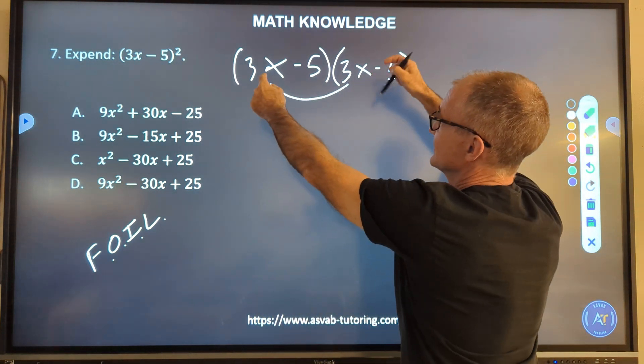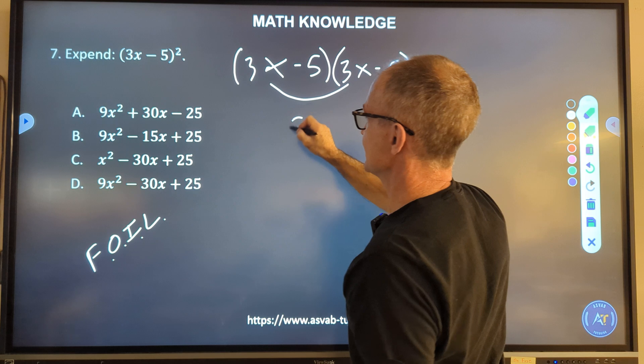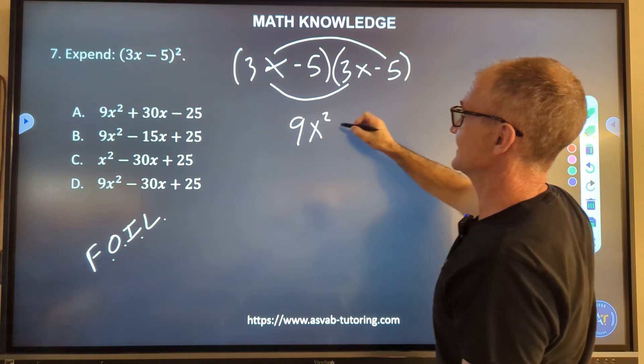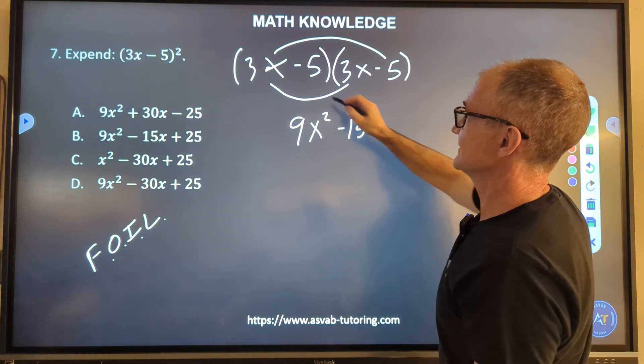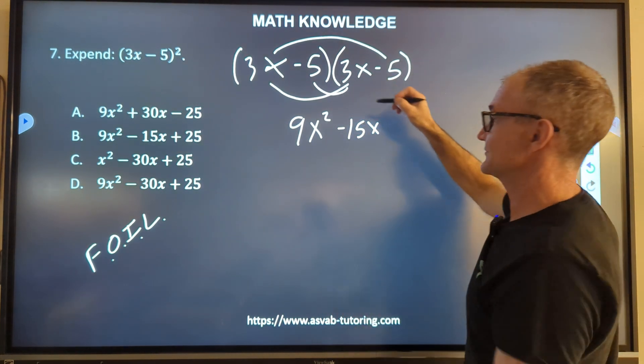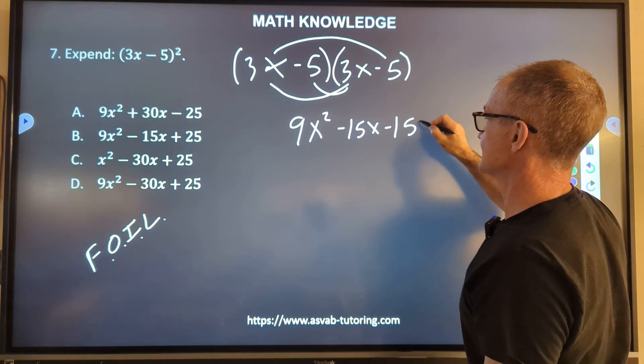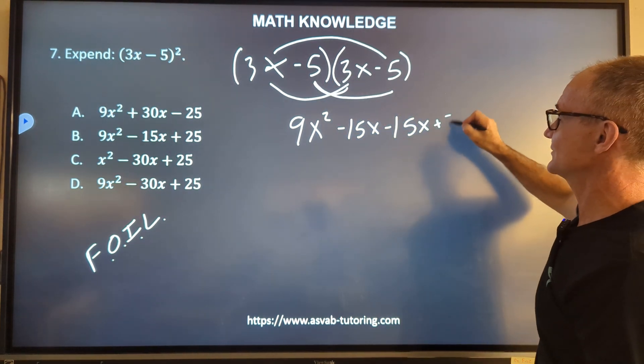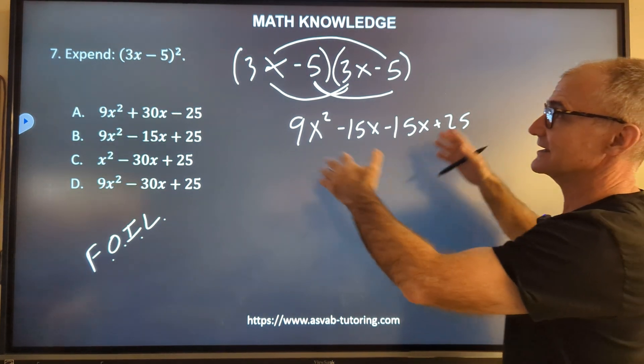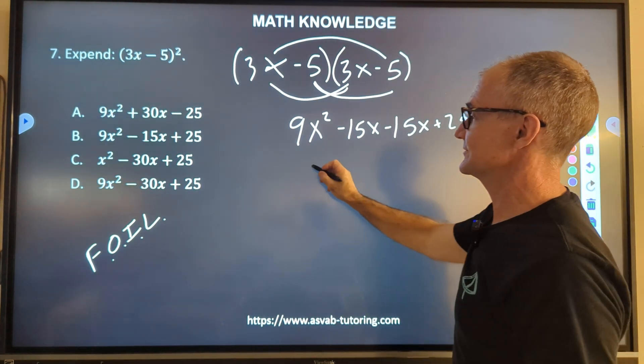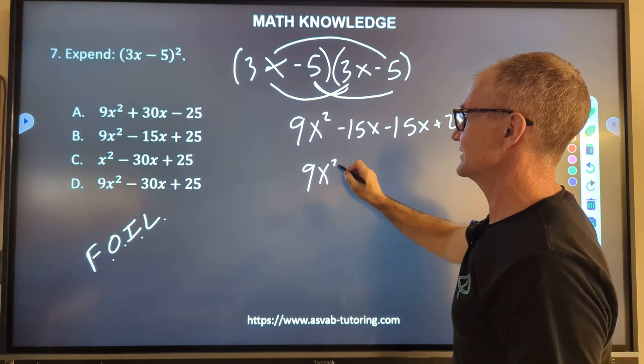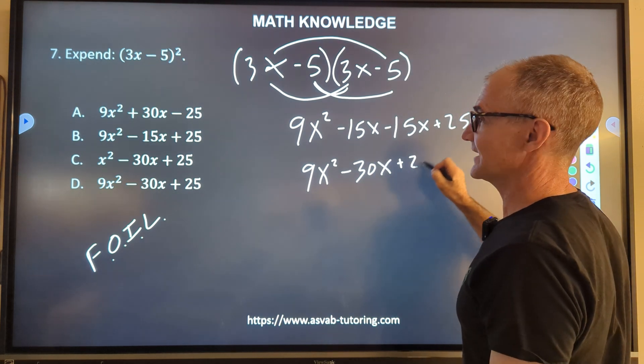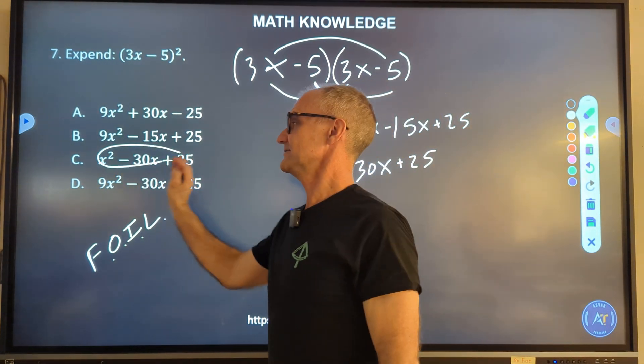Let's multiply the first terms together. 3x times 3x is 9x squared. The outer term is 3x times negative 5, negative 15x. The inner term, same thing, minus 5 times 3x minus 15x. And then the last terms are negative 5 and negative 5, 25. So now I FOIL it out. I expanded it. The next thing I do is combine similar terms. There's 9x squared minus 15x minus 15x minus 30x plus 25. And I can see it's answer C.